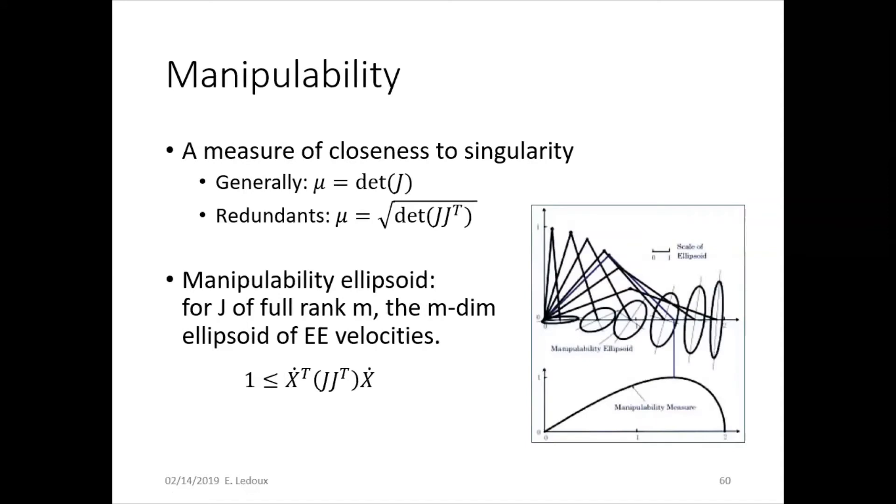A Jacobian can also be used to indicate manipulability, which is how close you are to a singularity. The manipulability factor is shown by the variable mu, and it is generally between zero and one.